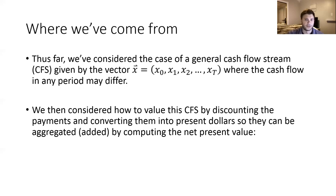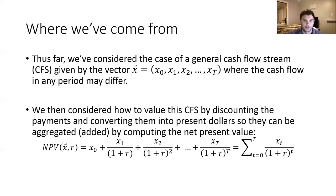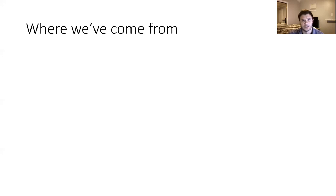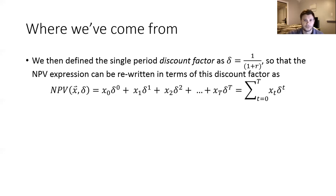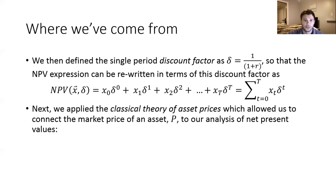We then considered how to value this cash flow stream by discounting each of those payments, converting them into present dollars, and applying the net present value calculation by summing up the discounted values of each payment measured in present dollars. From there, we took a slightly different perspective and defined what was known as the single period discount factor, which was the inverse of this factor 1 plus R. We rewrote the net present value expression in terms of the discount factor, which got rid of the fractions for us.